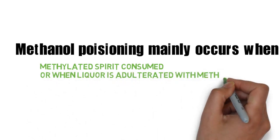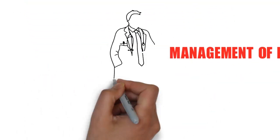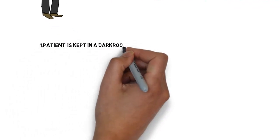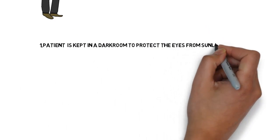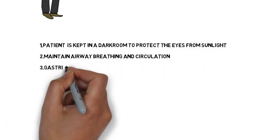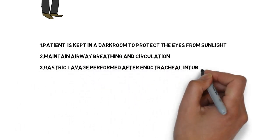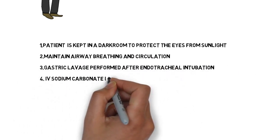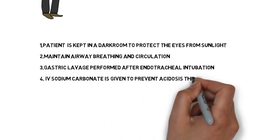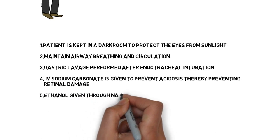Regarding the management of methanol poisoning: number one, the patient is kept in a dark room to protect the eyes from sunlight. Number two, maintain airway, breathing, and circulation. Gastric lavage is performed after endotracheal intubation. Intravenous sodium bicarbonate is given to prevent acidosis, thereby preventing retinal damage.